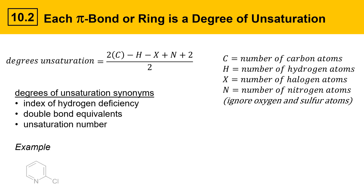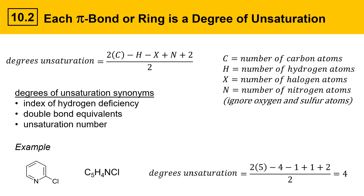Let's take a look at an example. Here's a molecule that has carbons, hydrogens, a nitrogen, and a chlorine in it. It has the formula C5H4NCl. Plugging into the degrees of unsaturation equation: two times five, minus four, minus one halogen, plus one nitrogen, plus two, all divided by two — equals four. This molecule has four degrees of unsaturation because it has three pi bonds within the ring, and then it has a ring itself as the fourth degree of unsaturation.